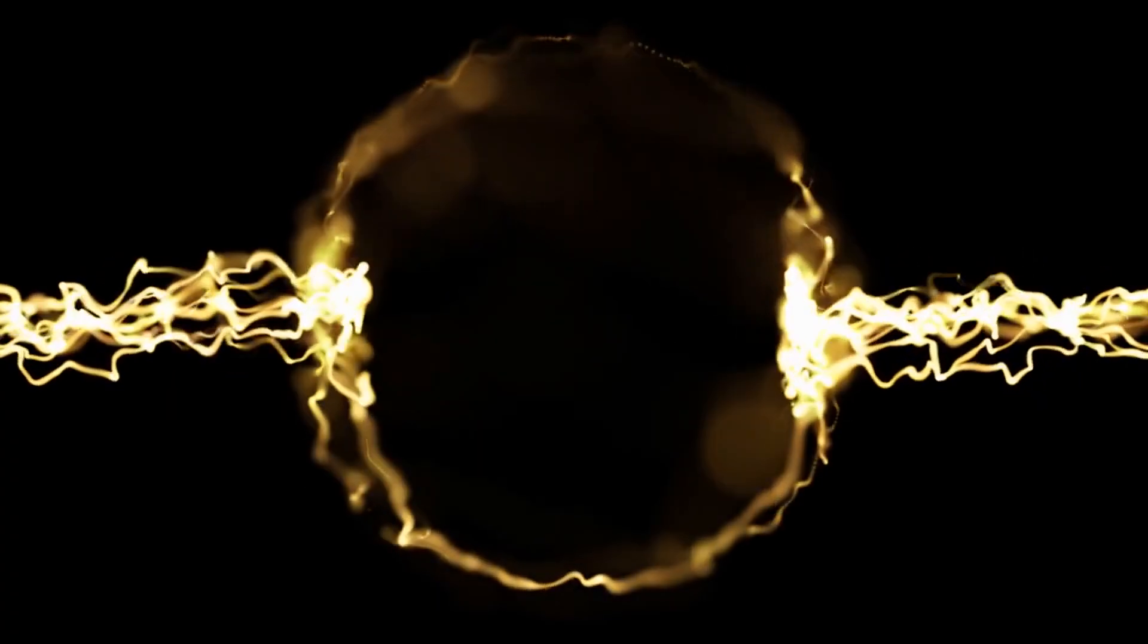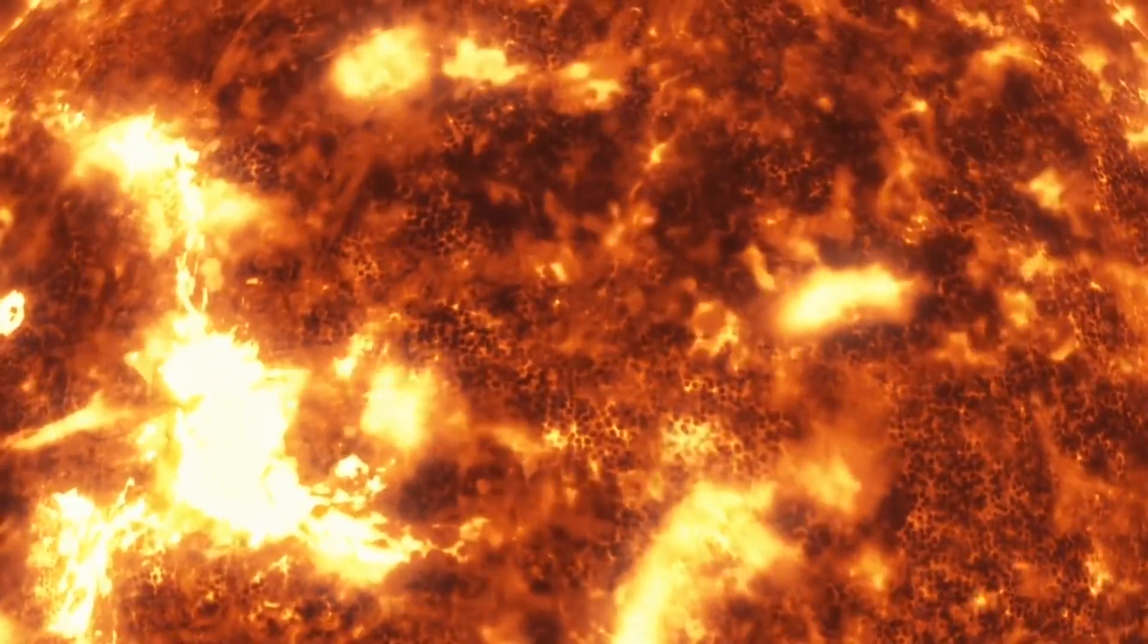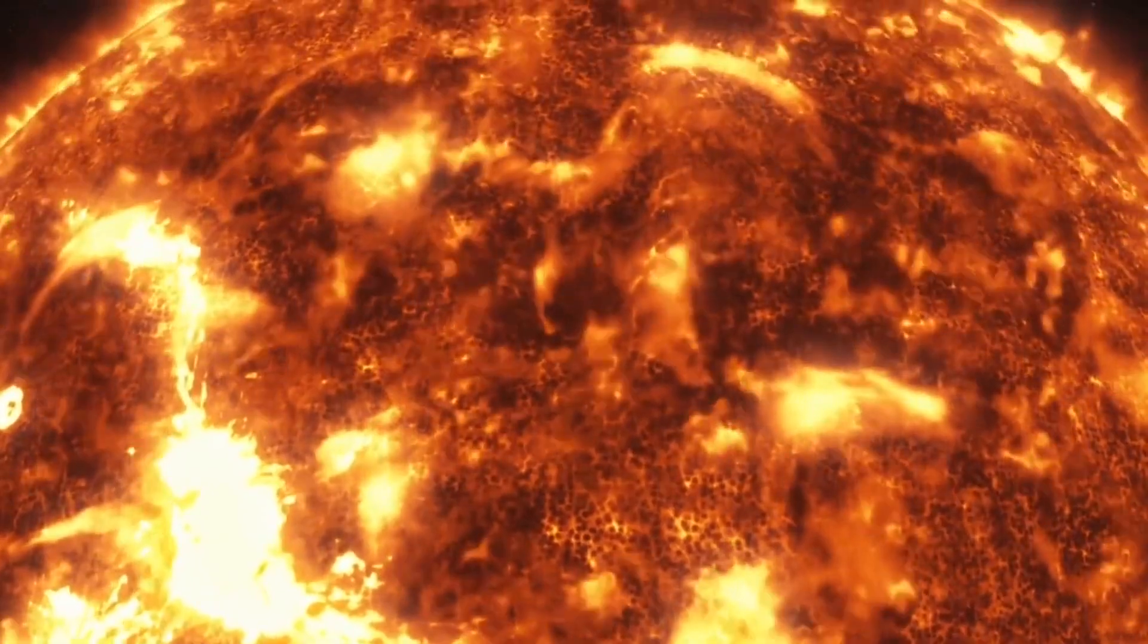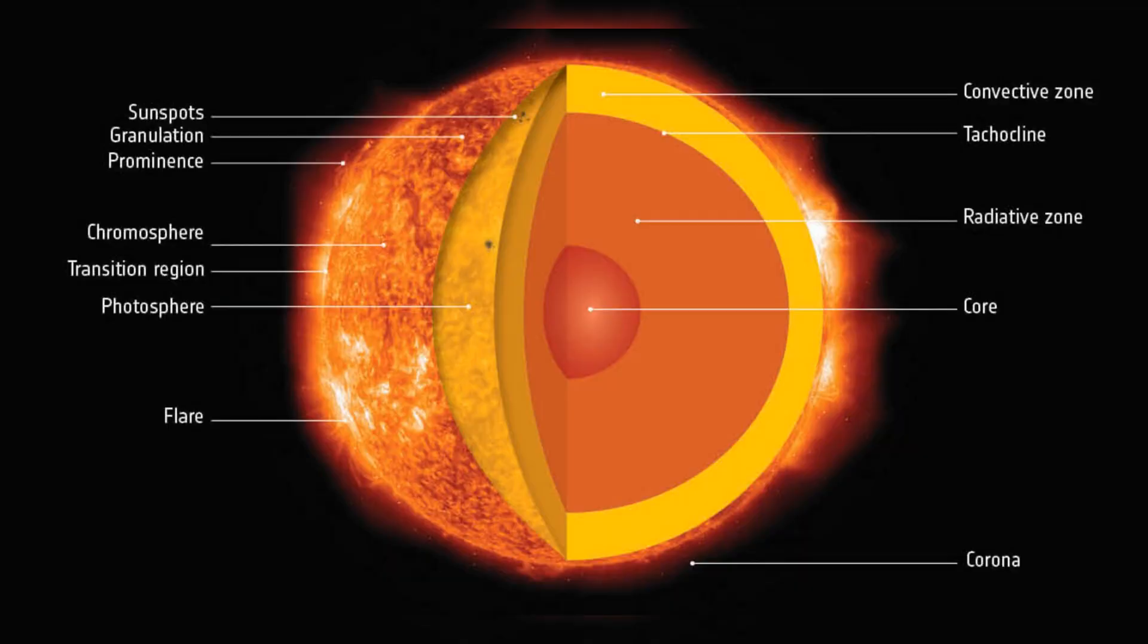No life can survive here. This is the core, the powerhouse where nuclear fusion happens. The Sun is 865,000 miles in diameter, and if we were to journey from the very center of the Sun outwards, we'd still be in the core for the first quarter of our trip. It's in this intense section where the Sun's energy is born.